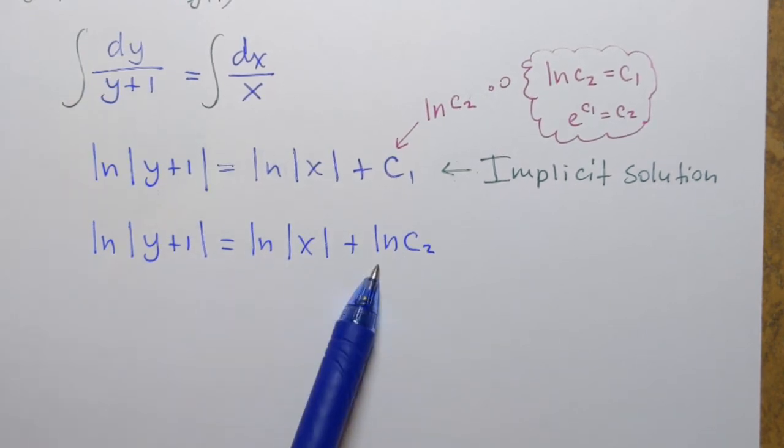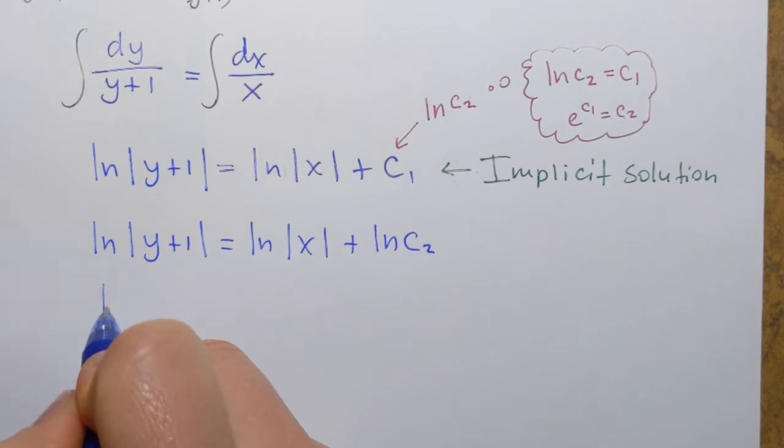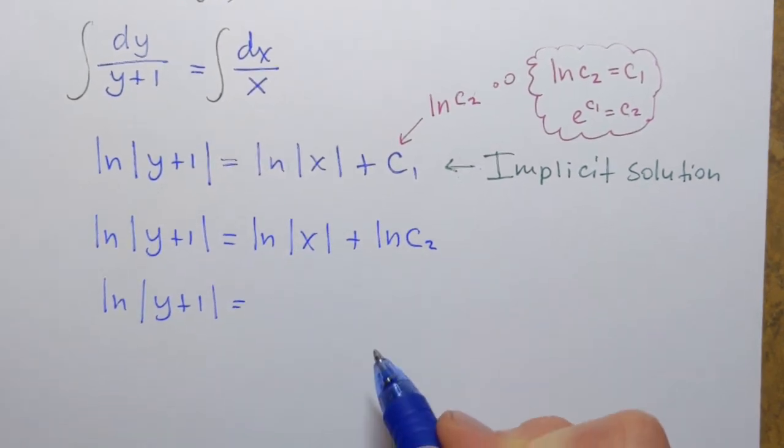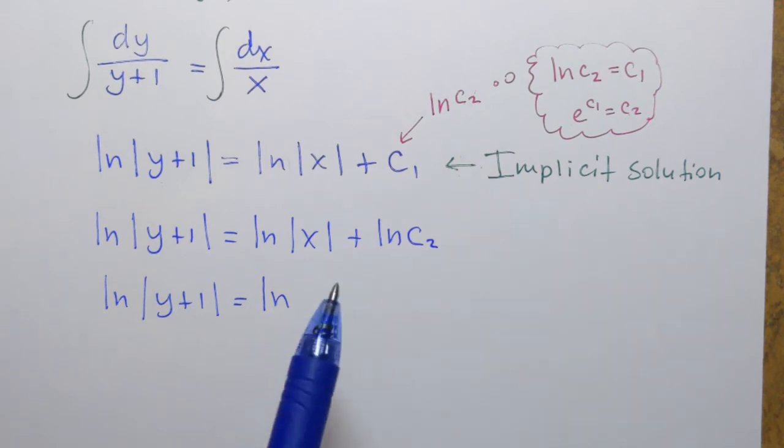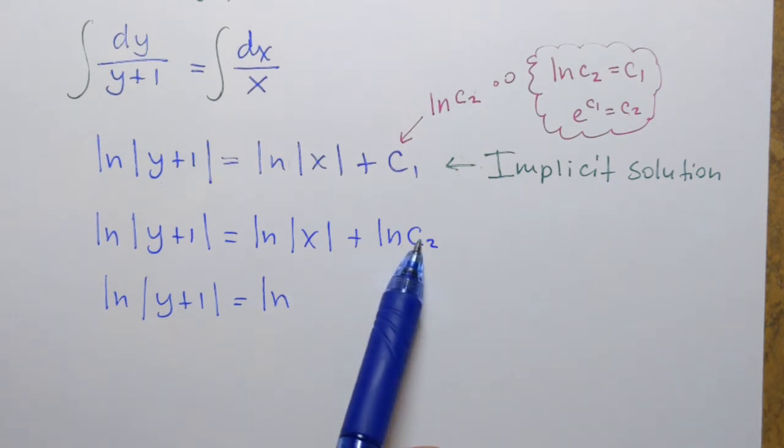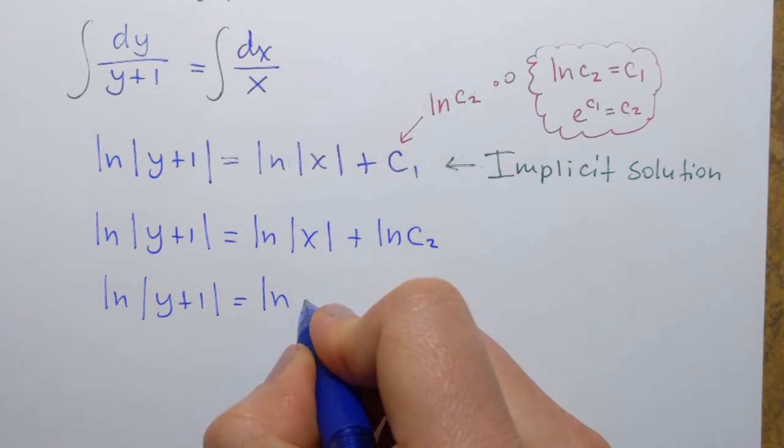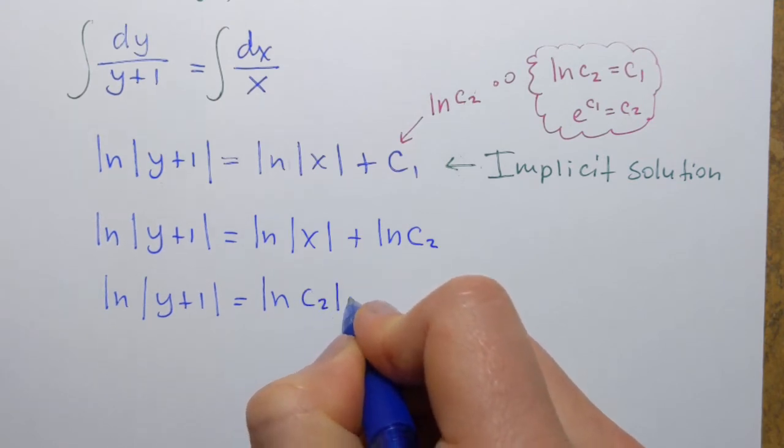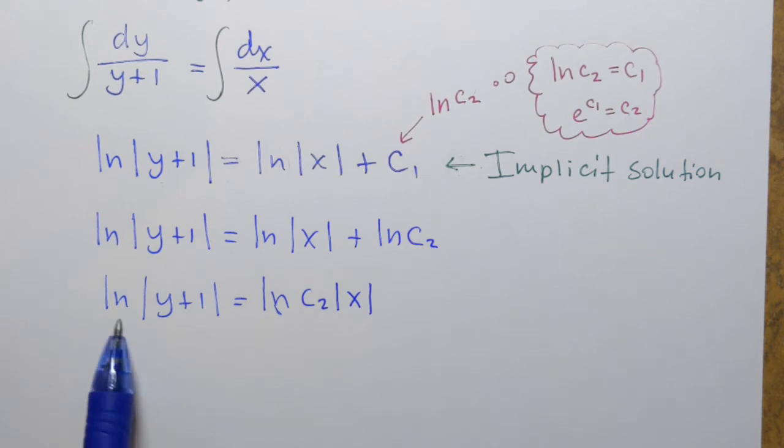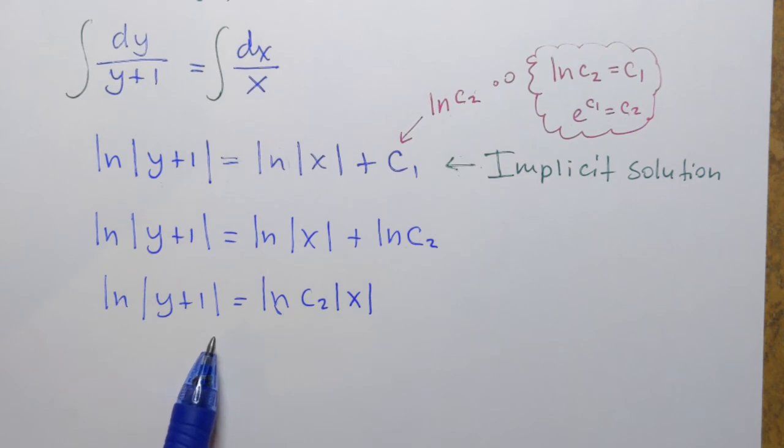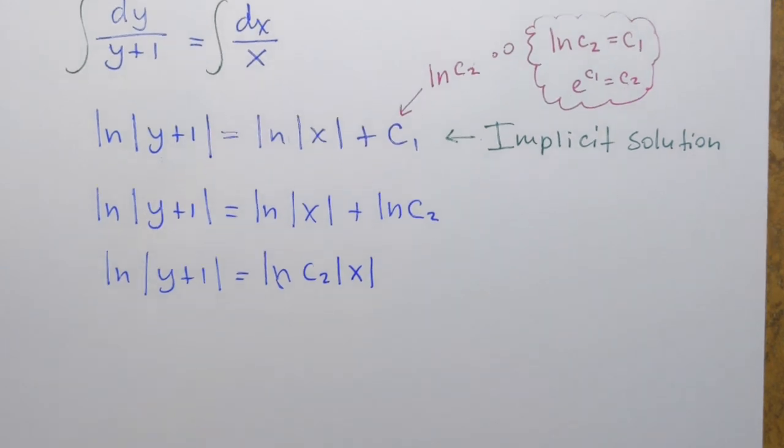Now the reason I needed that is because now I have logarithms everywhere throughout my function and that means that logarithms on the right hand side I can combine. So ln|y+1| equals ln of... Remember when we combine logarithms, when logarithms are added and we combine them what happens is that we have to multiply expressions standing inside of a logarithm. So it's going to be C2 times |x|.